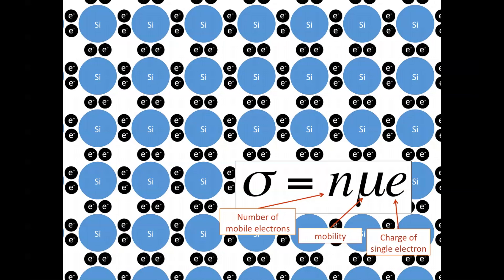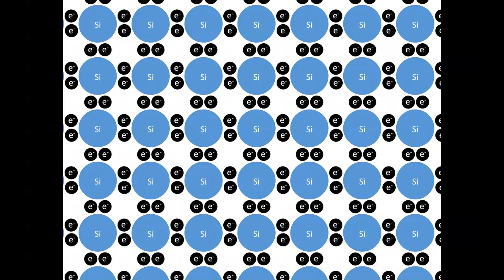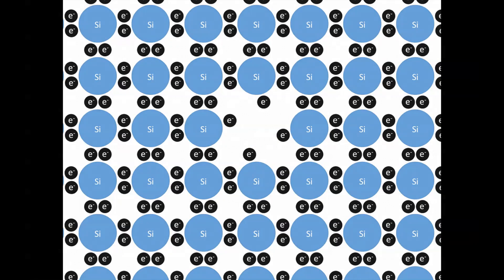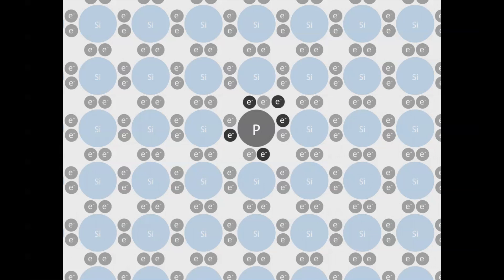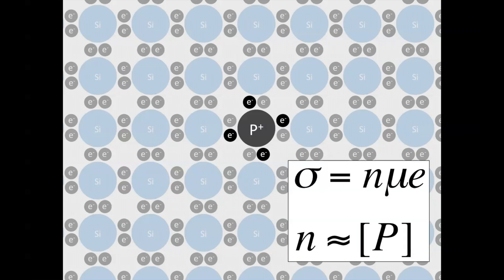So let's ask: what happens when we add dopants like phosphorus and boron to the silicon lattice? Now let's dope our material by replacing one of the silicon atoms with a phosphorus atom. Notice that the inserted phosphorus atom has five valence electrons, four of which form covalent bonds with their neighboring silicon atoms and are immobile. The fifth electron is not bonded, and as a result is free to move around the lattice. When the negatively charged electron leaves, the phosphorus dopant is now positively charged. So each phosphorus atom added will contribute a single mobile electron — the number of mobile electrons is roughly equal to the number of phosphorus atoms in our system.